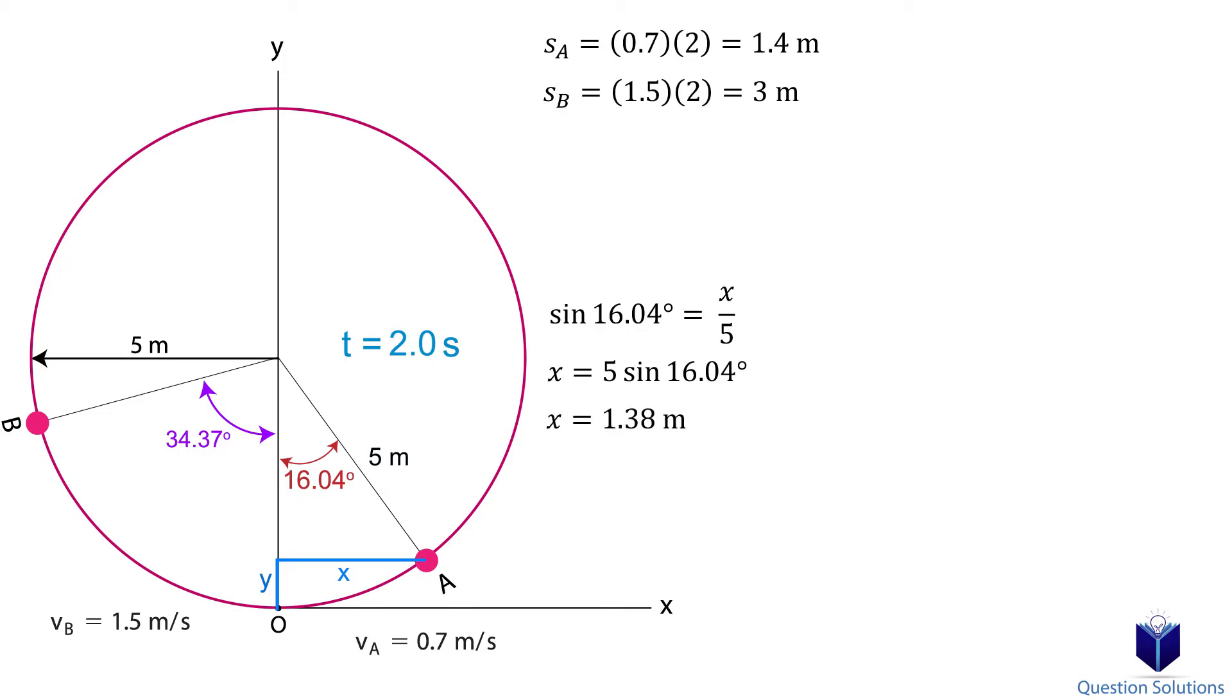Now for the y-axis. Again, let's look at the diagram. Notice how we can calculate y' using cosine. So we have cos 16.04 degrees is equal to y' over 5. Solving gives us y'. Now to figure out the y length, we just need to subtract y' from the radius, which is 5 meters. So now we have the y length as well.